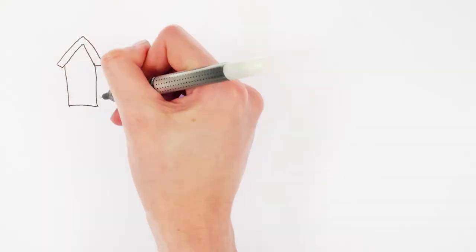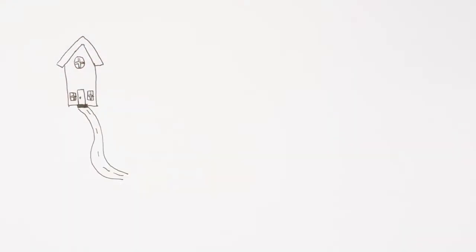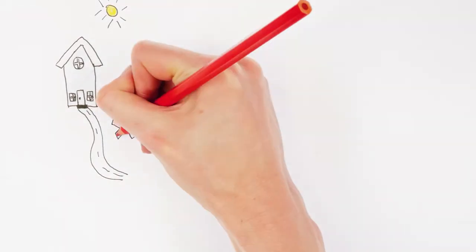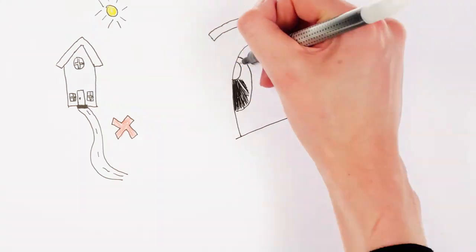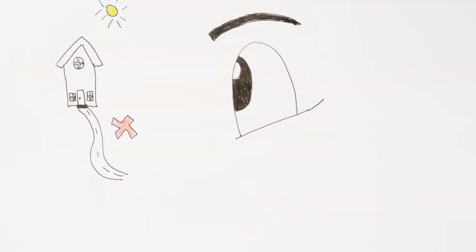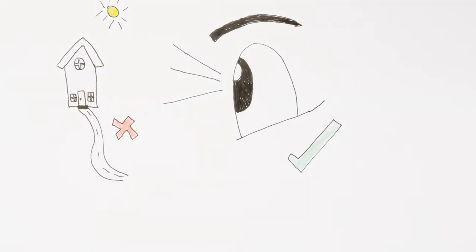This change in focus is possible due to a mechanism we call accommodation. This has nothing to do with somewhere to stay when you are on holiday, instead accommodation is the name given to the way the eye adjusts its focus to look at objects at various distances.